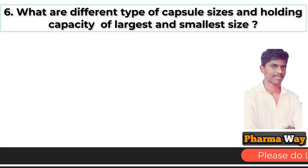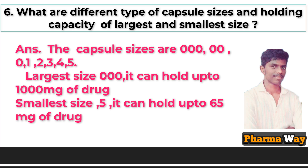What are the different types of capsule sizes and holding capacity of the largest and smallest size? Answer: Capsule sizes are normally eight types: 000, 00, 0, 1, 2, 3, 4, and 5. The largest size is 000, which can hold up to 1000 mg of drug, and the smallest size is 5, which can hold up to 65 mg of drug.